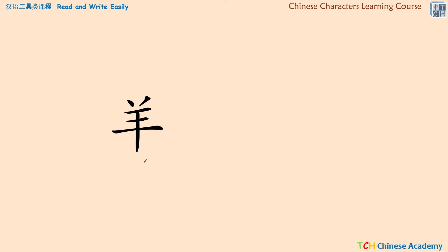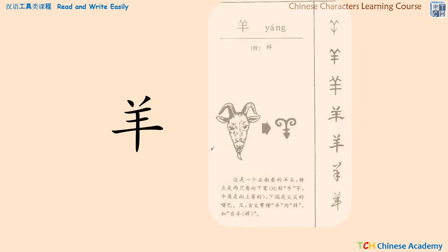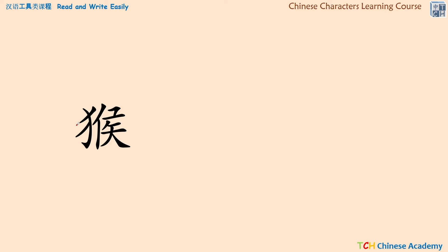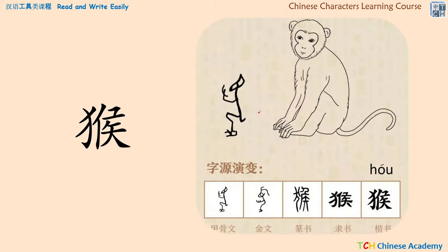The next character is based on this animal — yes, it is a goat. This is the very original and ancient character, which is based on the head of a goat. We can see the curved horn, the pointed chin, and also the beard. It is pronounced 'yáng.' Over the years, these horns changed into two dots, giving us three horizontal lines and a vertical line — so it represents 'yáng,' the goat.